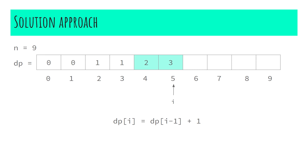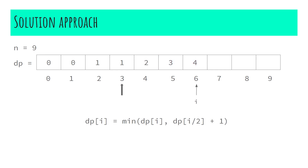Moving to index five: I store three first. Since five is neither divisible by two nor three, the value remains three. Moving to index six: I first store four. Since six is divisible by two, I compare with dp[6/2] + 1 = dp[3] + 1 = 2, which is less than four, so I store two. Since six is also divisible by three, I check dp[6/3] + 1 = dp[2] + 1 = 2, so no change.